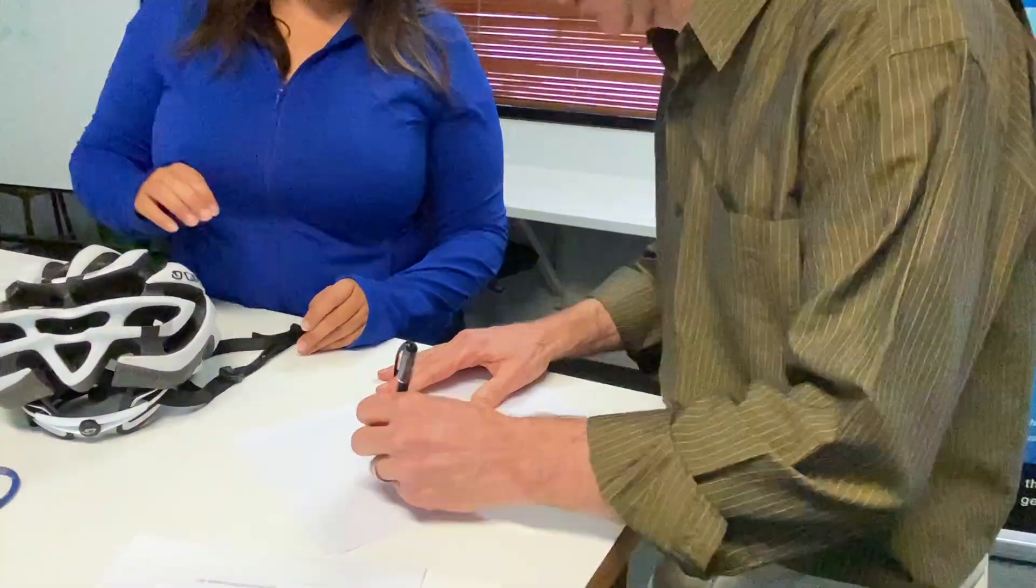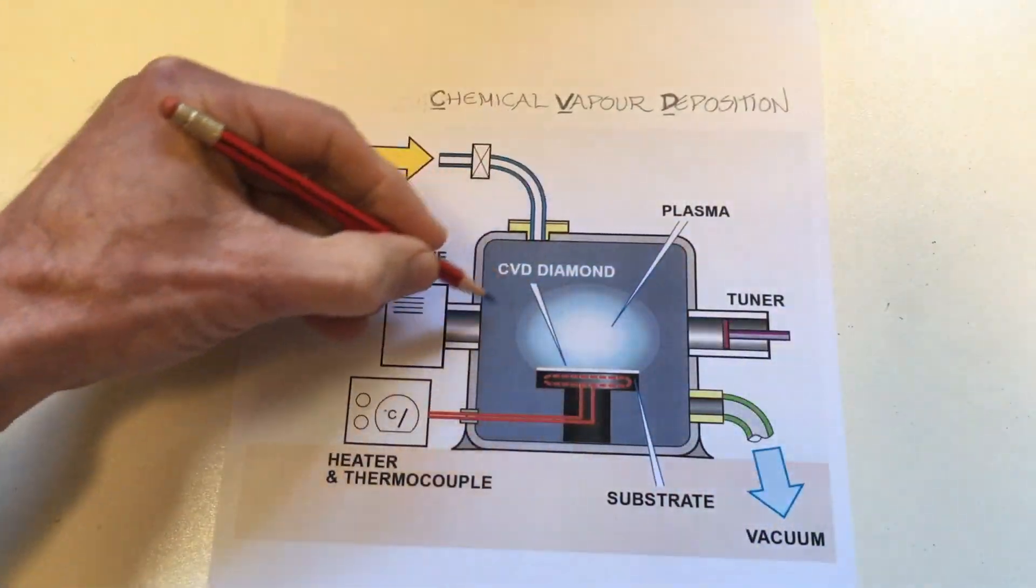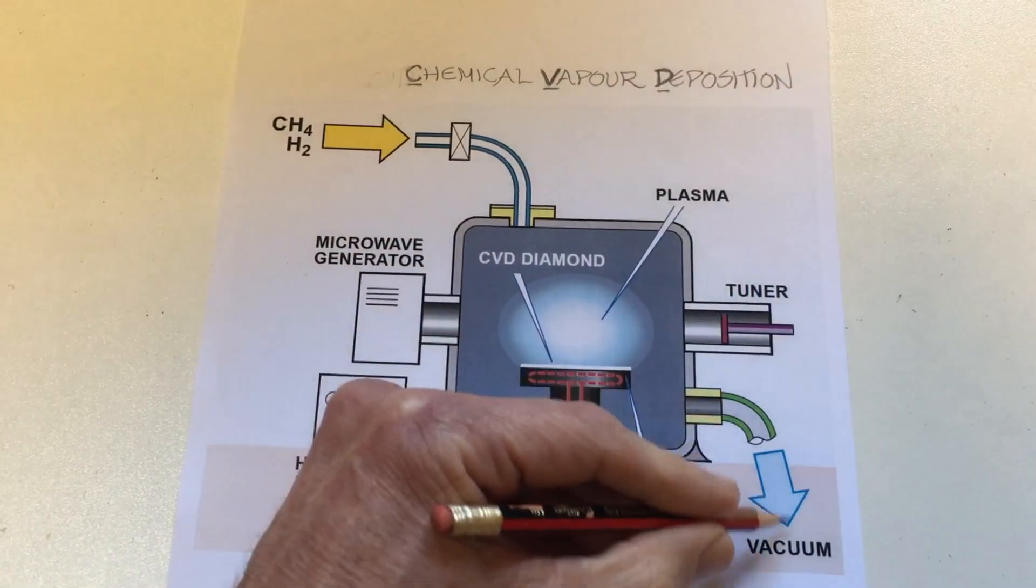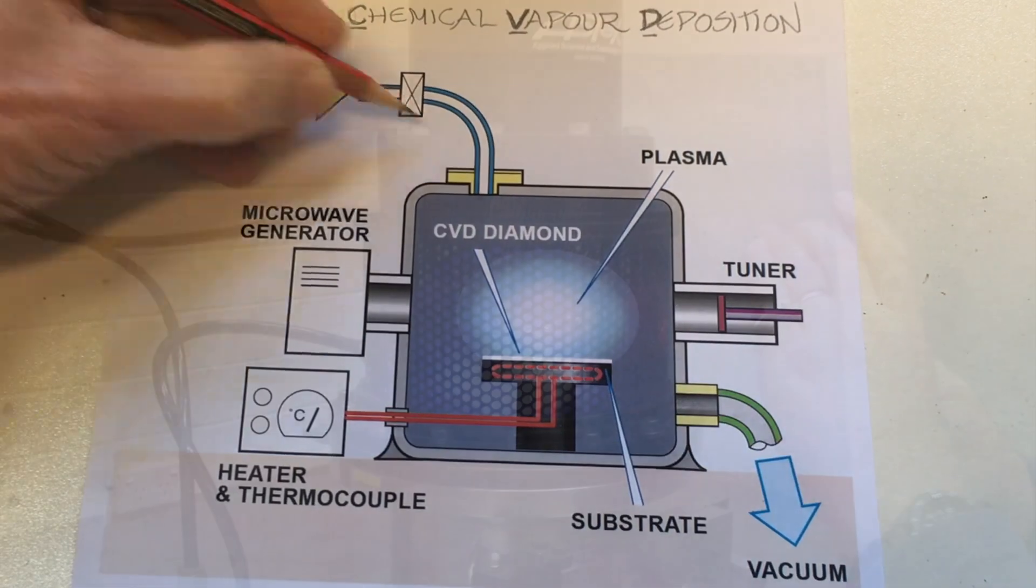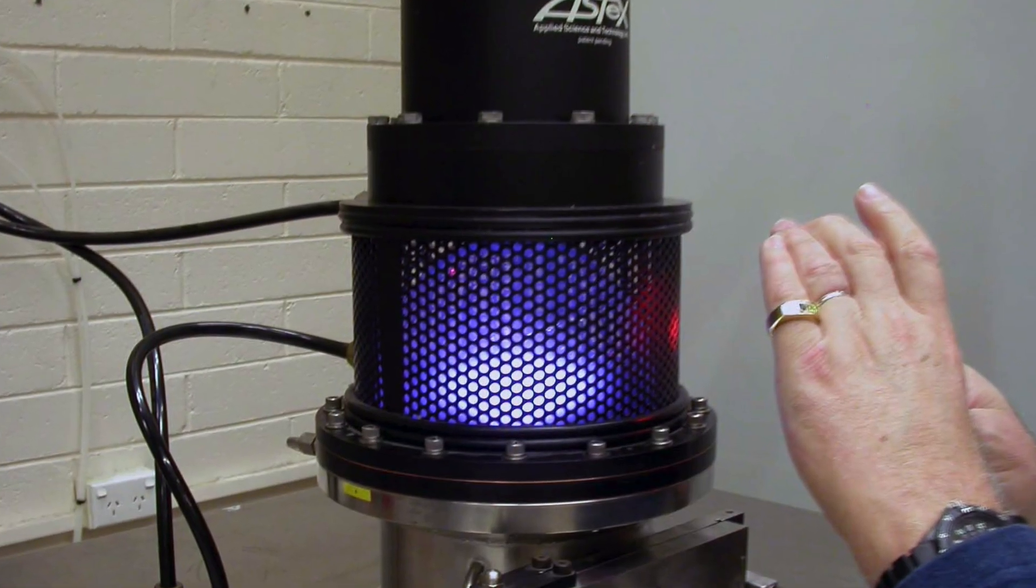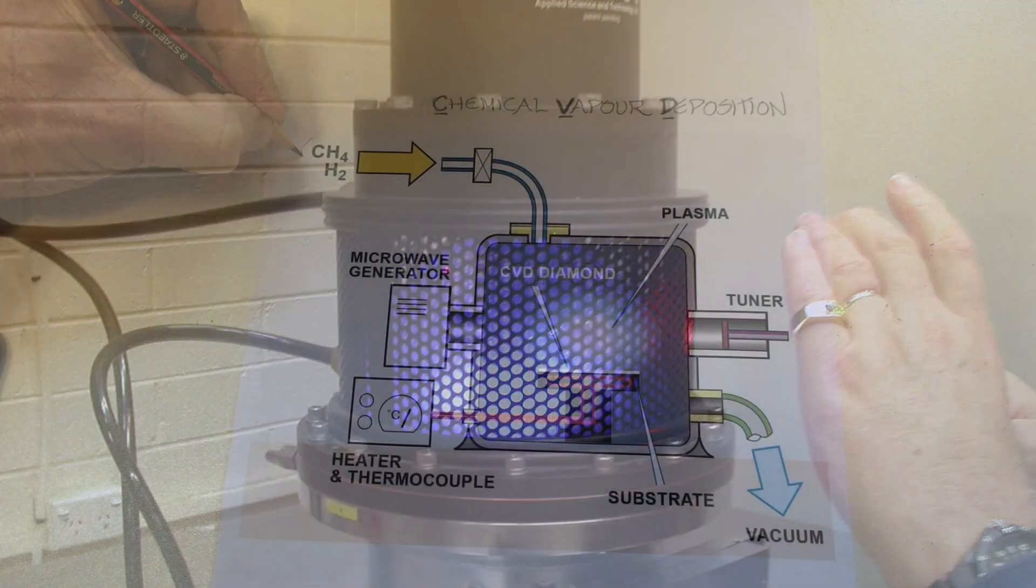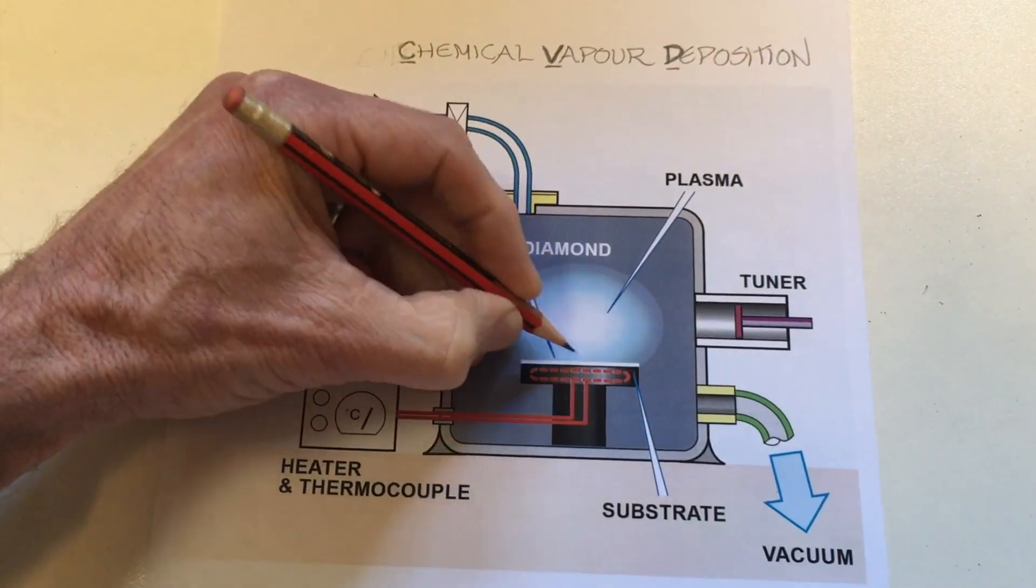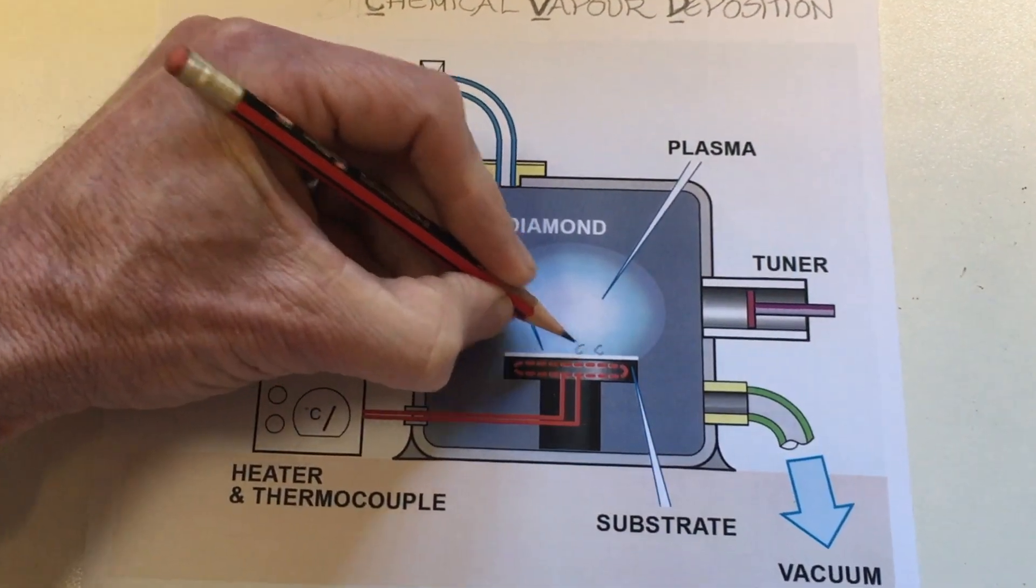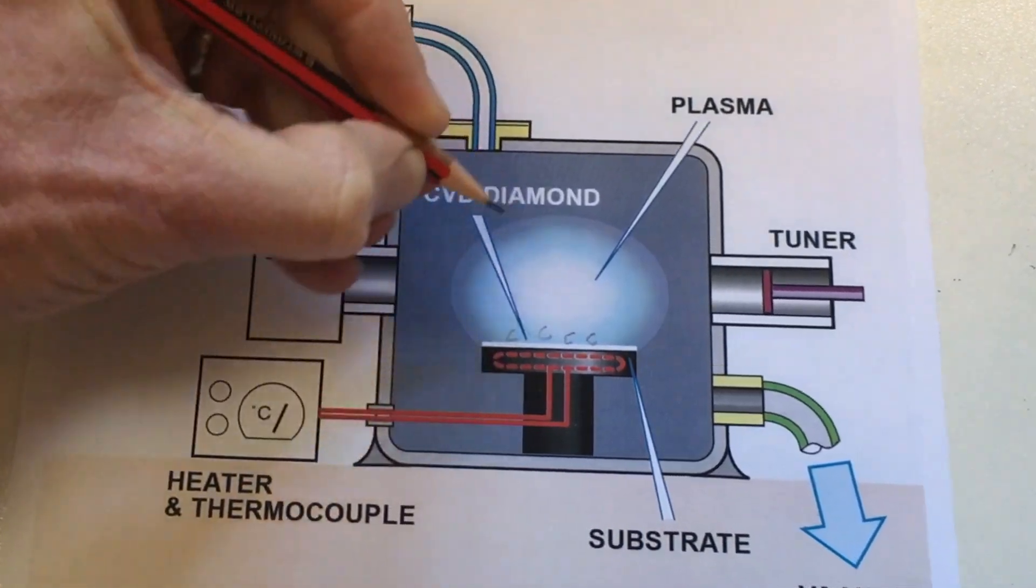What you have there is a reaction chamber, often made of glass, is evacuated and filled with a stream of methane and hydrogen. The methane is ionized in the plasma that is generated by microwaves. And the carbon in the methane deposits onto a seed crystal diamond plate. Over a period of days, the diamond plate thickens.